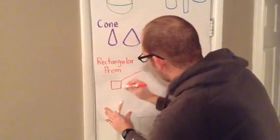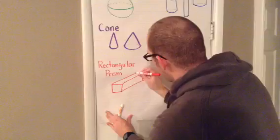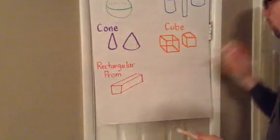and then we'll do longer pieces like this. That's a rectangular prism.